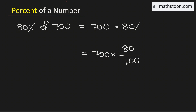We know that 100 goes into 700 seven times. Therefore, it is equal to 7 times 80, which is the same as 560.